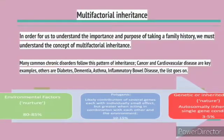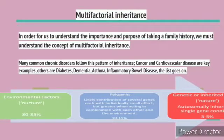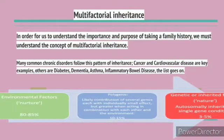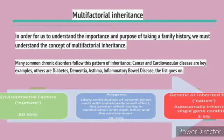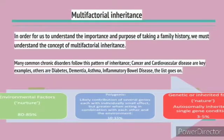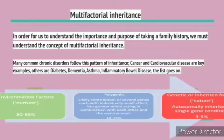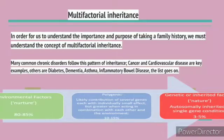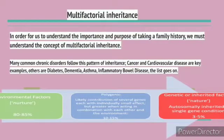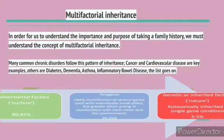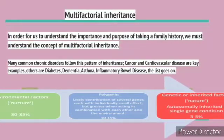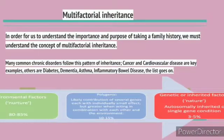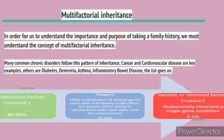For these conditions, we have multifactorial inheritance. We say that 80–85% is environmental factors — what we are exposed to in the environment, for example contamination, chemicals, and other factors — and their implication in developing cancer is very relevant. The next is polygenic factors, where several genes each have a small individual effect, contributing 10–50% to developing this cancer.